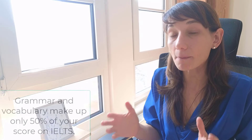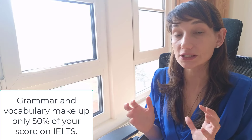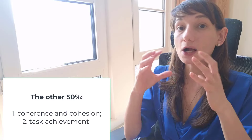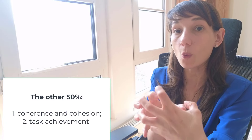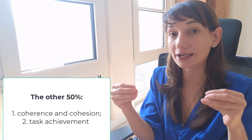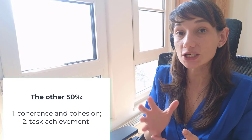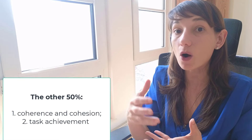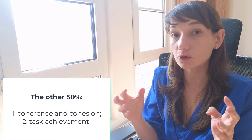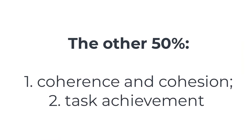In fact, vocabulary and grammar make up only 50% of your score. The other 50% comes from coherence, cohesion — how well your writing is organized, how well the sentences are connected, how well you achieve the task, how well you complete the requirements of the task. And this is very important.